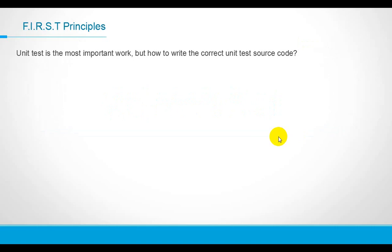The unit test is the most important work. Every developer engineer should write unit test code to verify the source code correctness before pushing the source code change to a control system like GitHub. Even the unit test code will come before the source code development work under the TDD methodology.